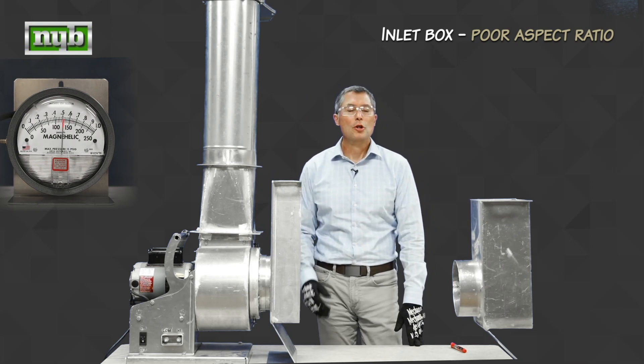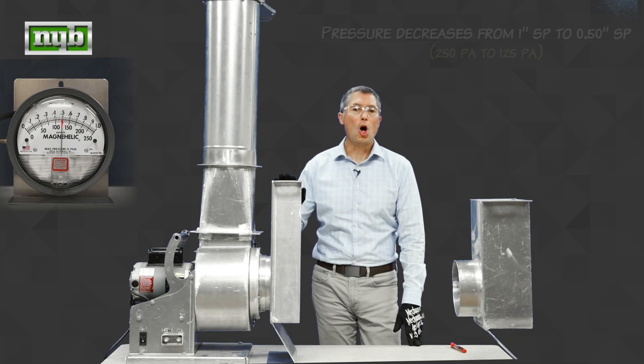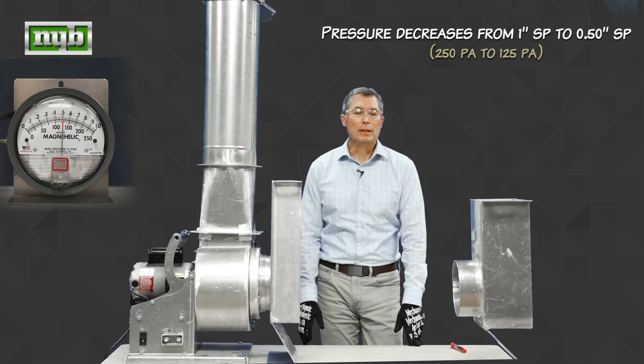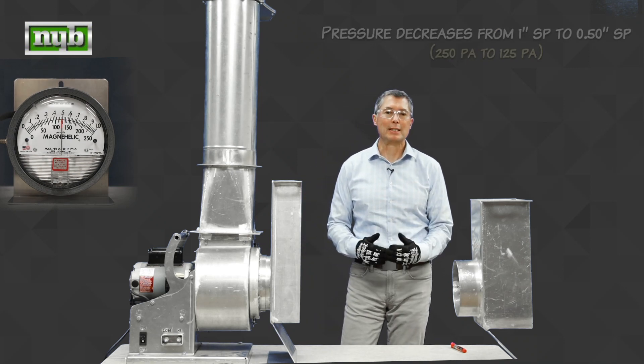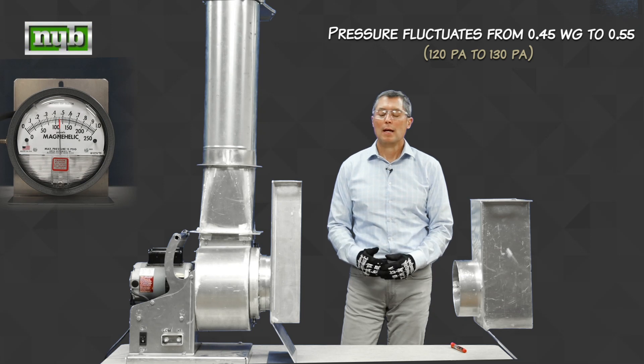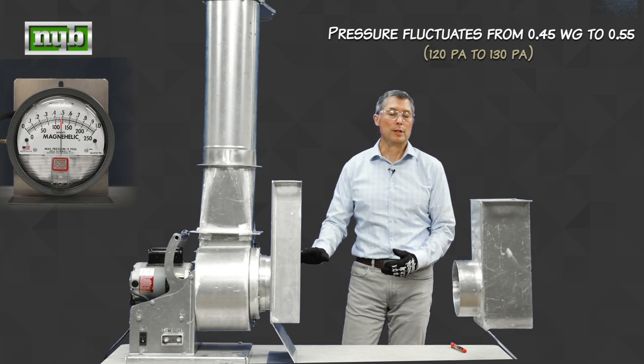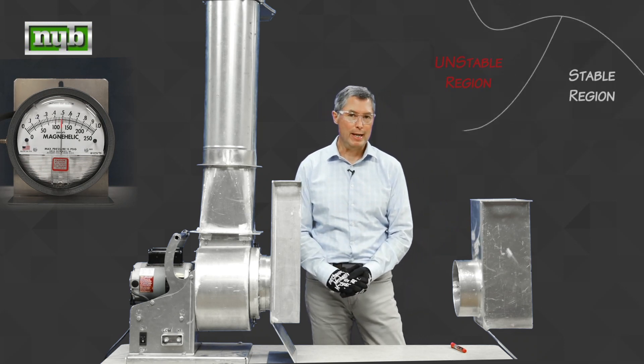Looking at the magna-helic gauge, you'll notice a couple things. One is, it's a pretty substantial loss when we put this box onto the fan. Secondly, you'll notice that the needle on the magna-helic is bouncing up and down. It's not at a steady state. That means that we've created turbulent flow with this fan. We've actually pushed this fan into an unstable region on the fan curve.